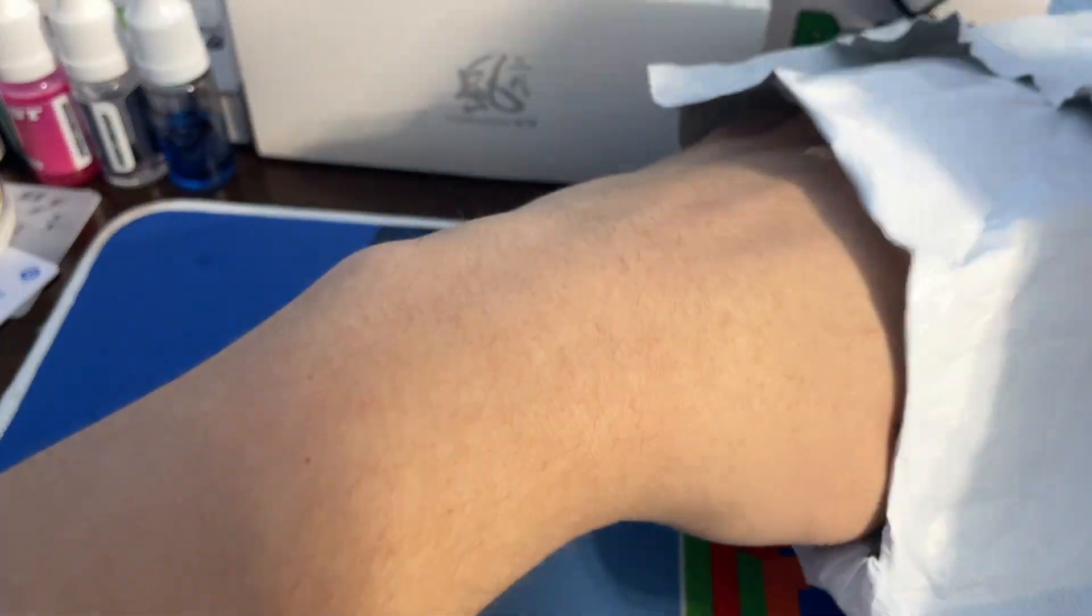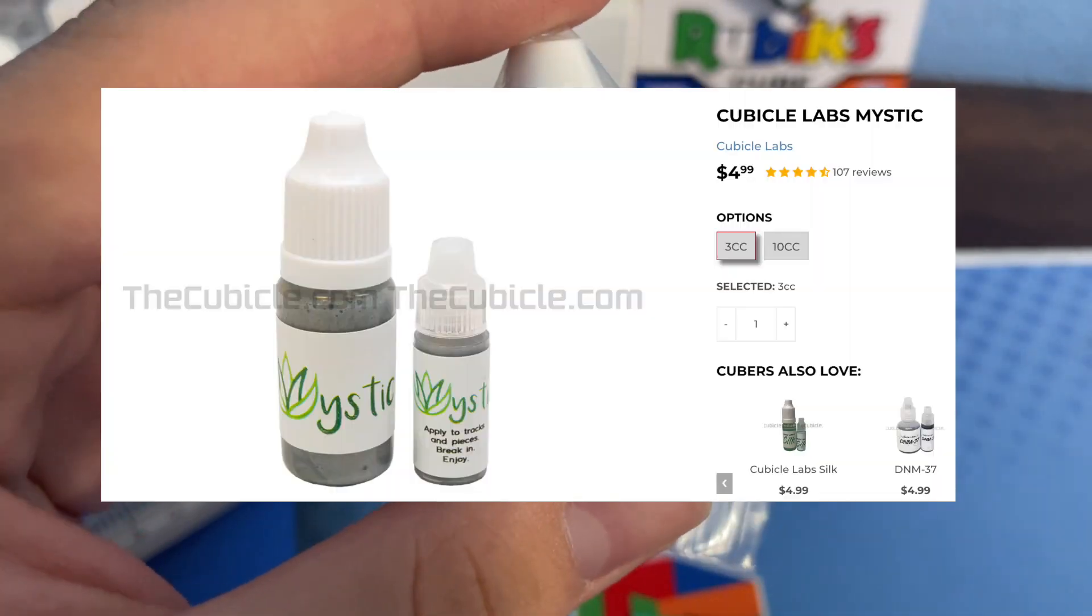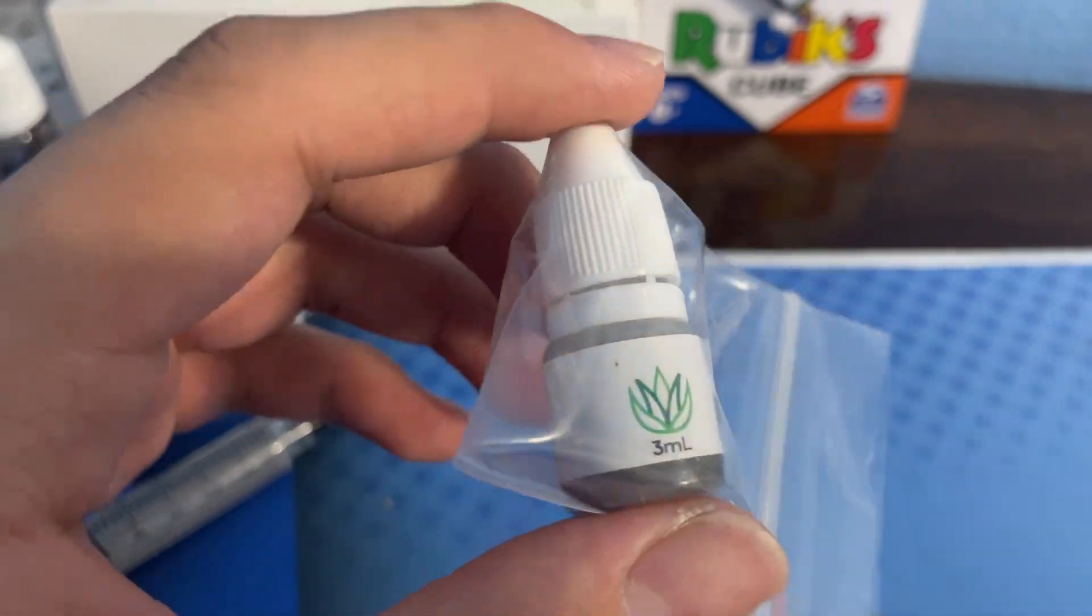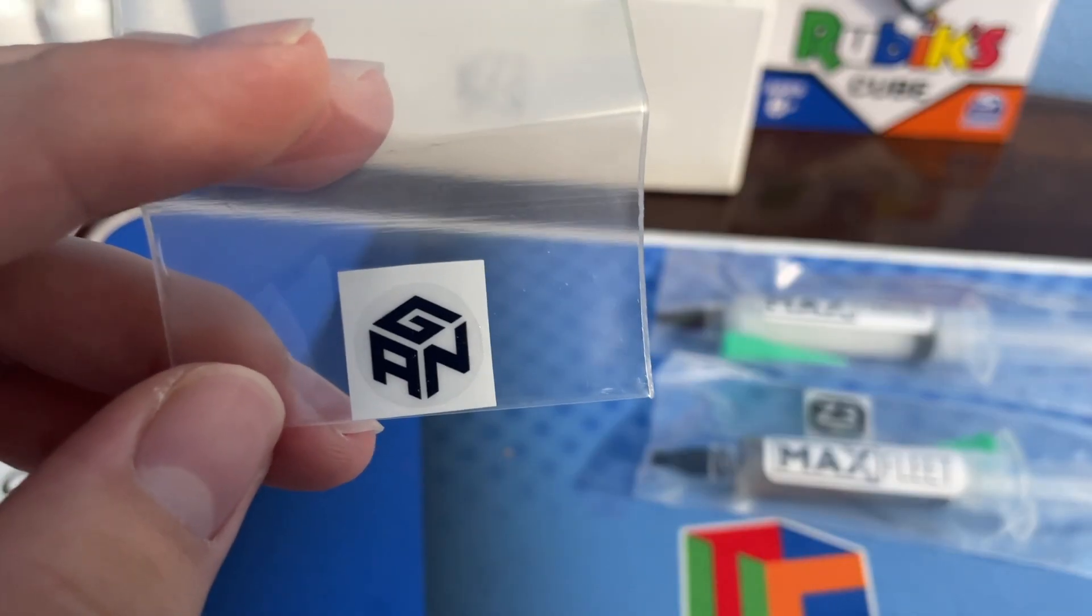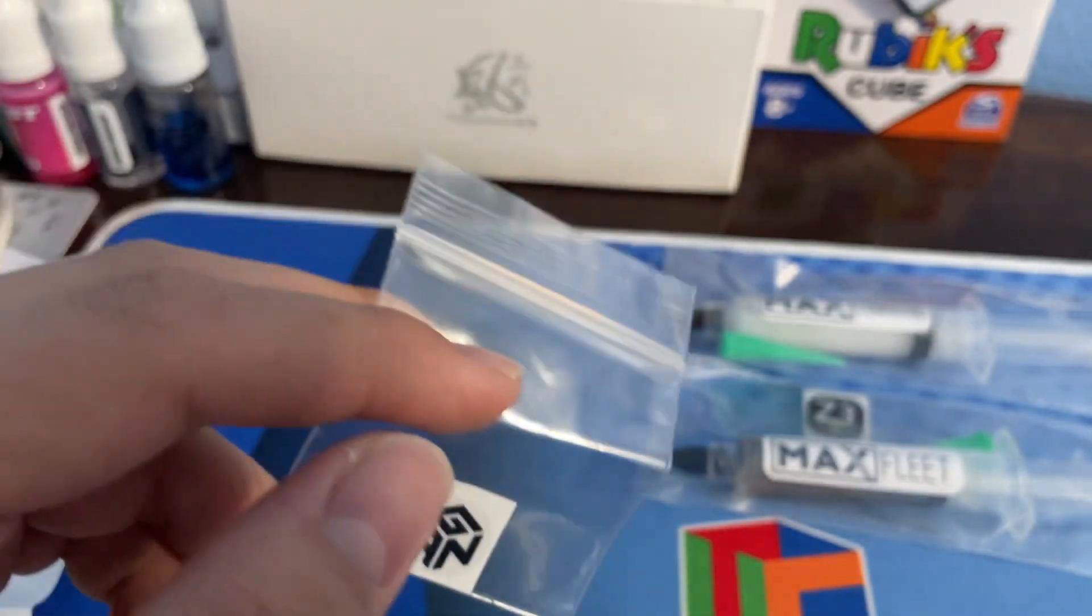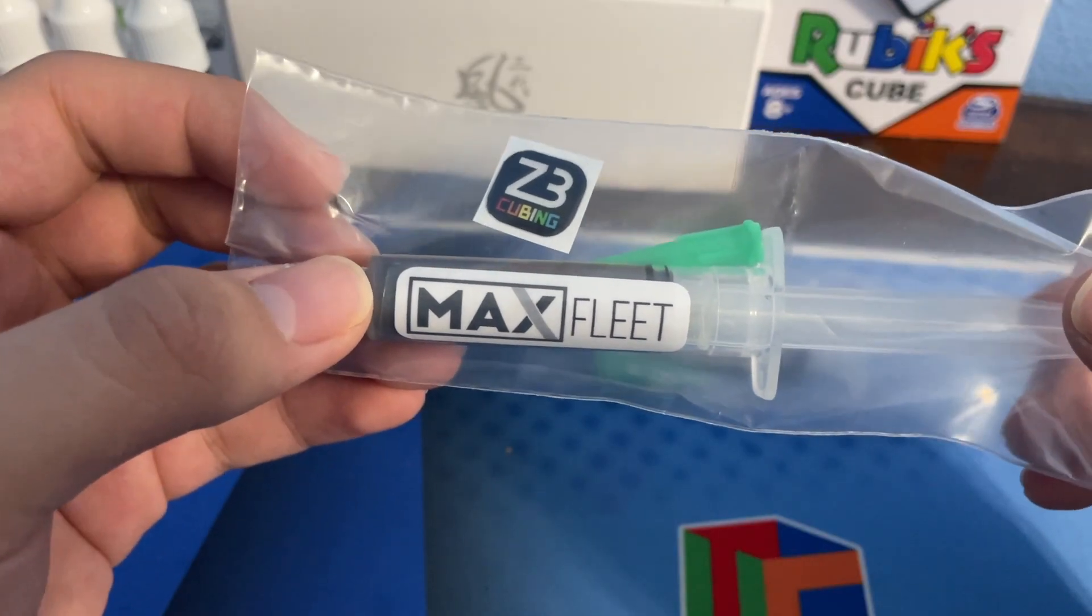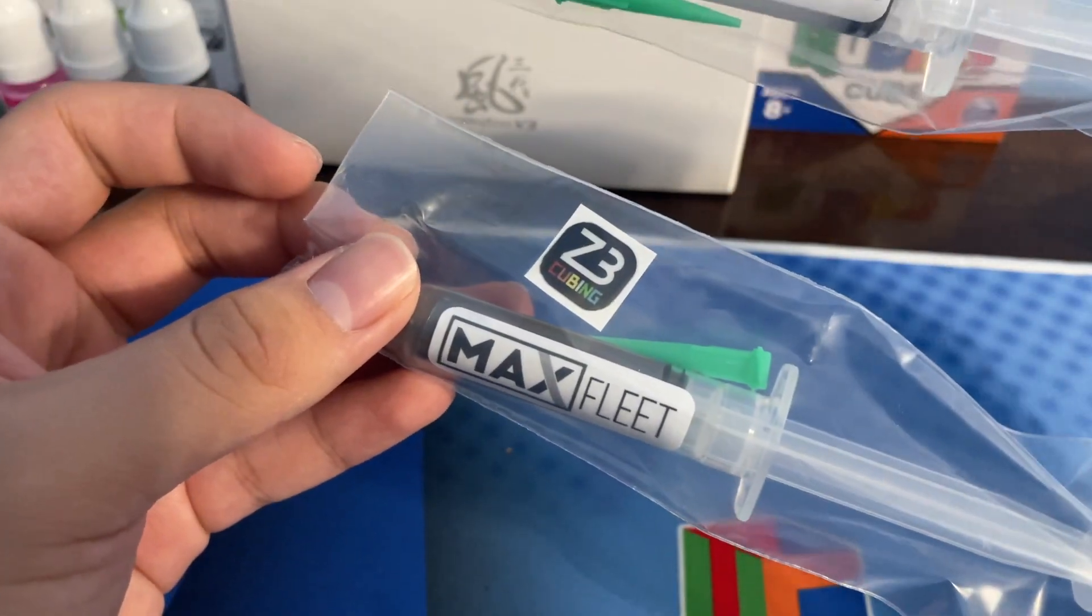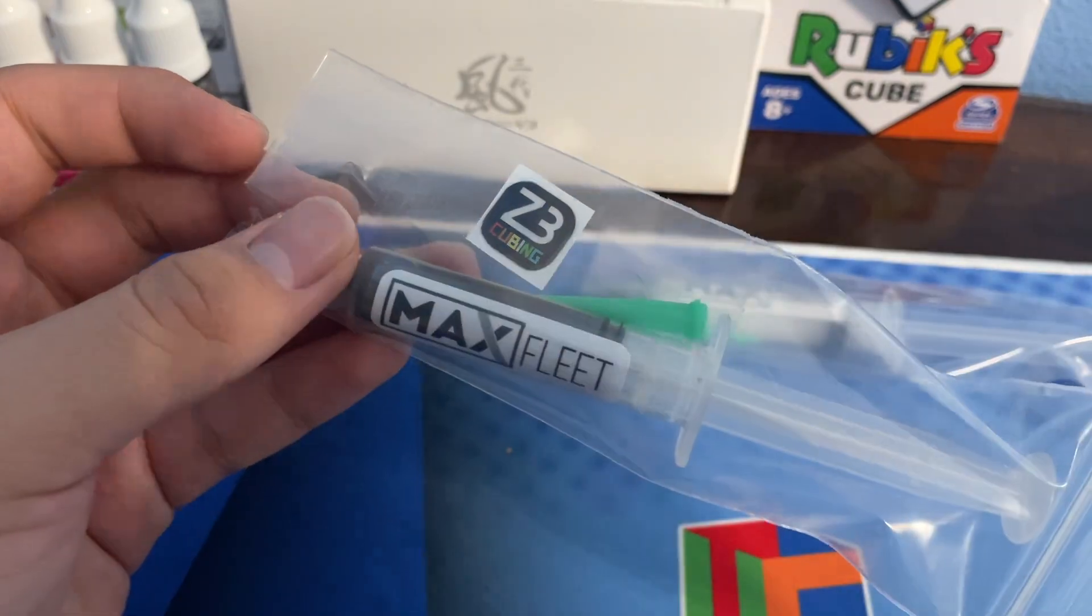I also got some Majestic, I believe that's how you pronounce it, lube which is plant-based, but that's for another video. I don't remember actually buying this, I just remember looking at it but I possibly accidentally hit add to cart. But oh well, out of the way, here are the two lubes: Max Fleet and Max Command. And yes, I use discount code Z3 Cubing.